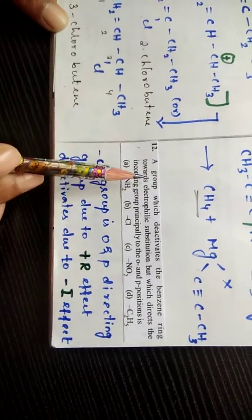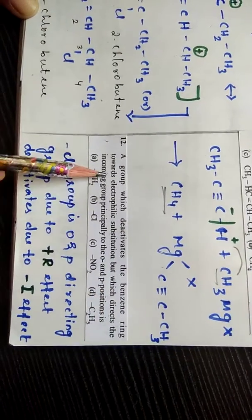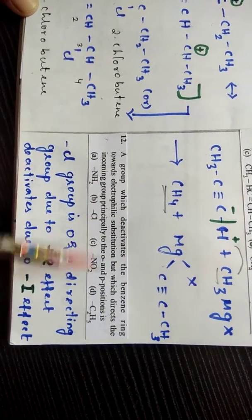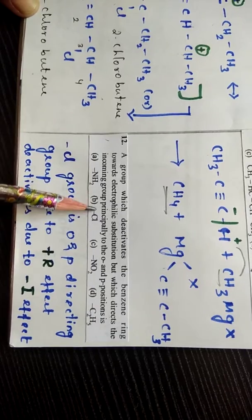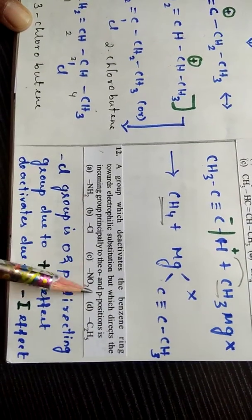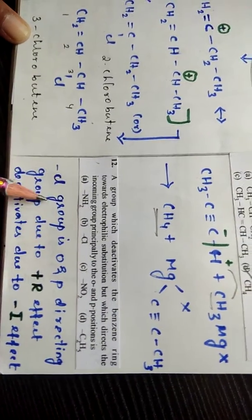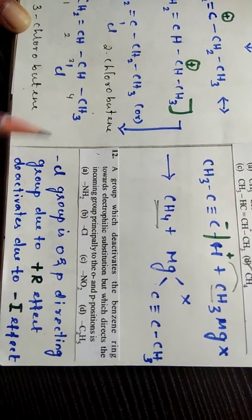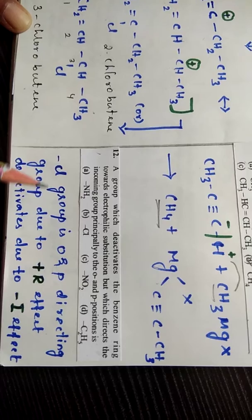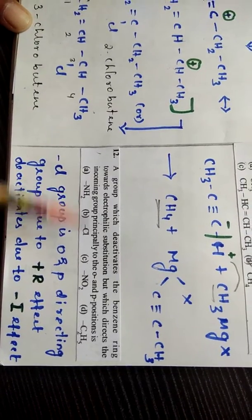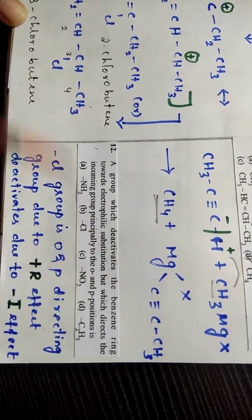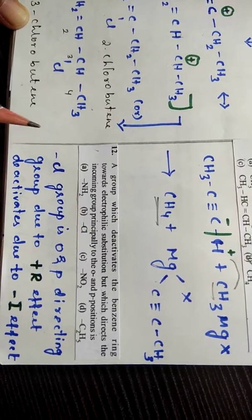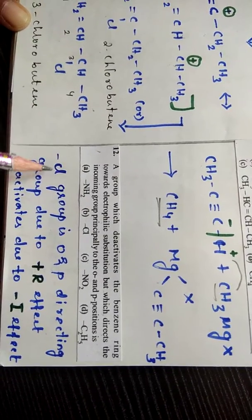Then 12th question: A group which deactivates the benzene ring towards electrophilic substitution but which directs the incoming group principally to ortho and para positions. Here chlorine group is ortho para directing group. Generally electron releasing groups are ortho para directing groups only. But here they are giving one more clue: deactivates the benzene ring towards electrophilic substitution. Then here chlorine does that.